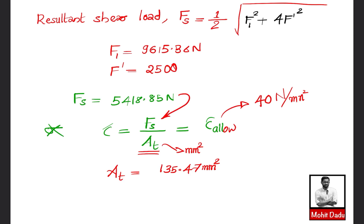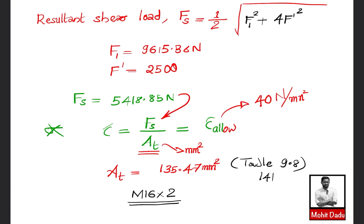Using table 9.8 (page 141 of the data book), we select the bolt whose tensile area is just above 135.47 mm². The next higher standard area is 157 mm², which corresponds to an M16×2 bolt. This is the selected bolt for this eccentric loading application.